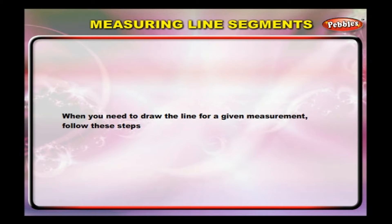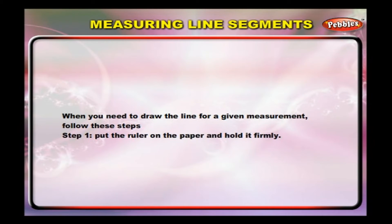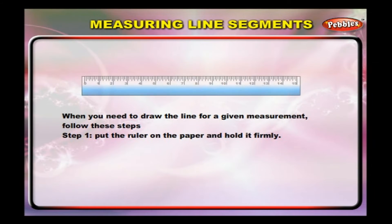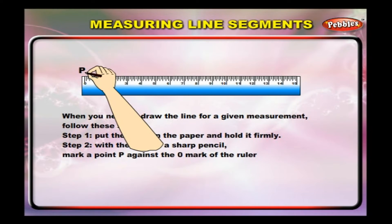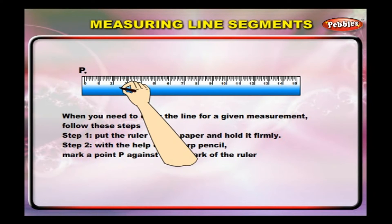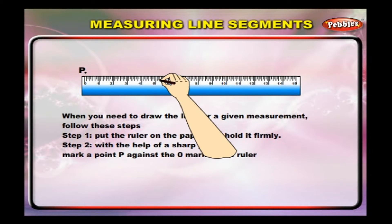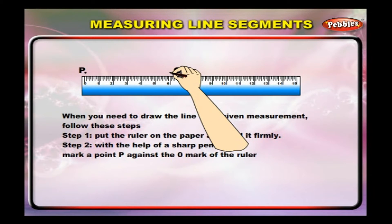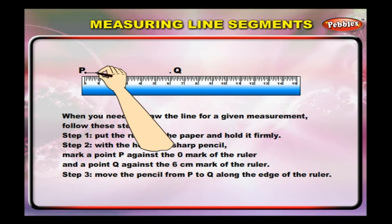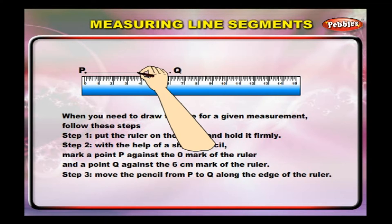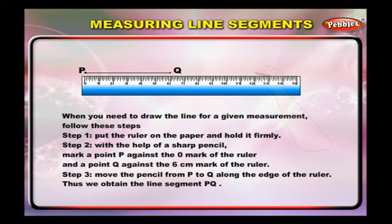When you need to draw a line for a given measurement, follow these steps. Step 1: put the ruler on the paper and hold it firmly. Step 2: with the help of a sharp pencil, mark a point P against the zero mark of the ruler and a point Q against the 6 centimeter mark of the ruler. Step 3: move the pencil from P to Q along the edge of the ruler. Thus, we obtain the line segment PQ.